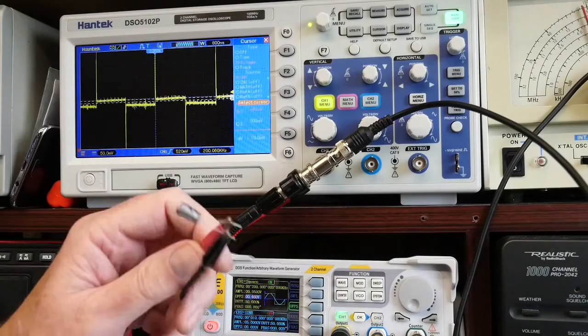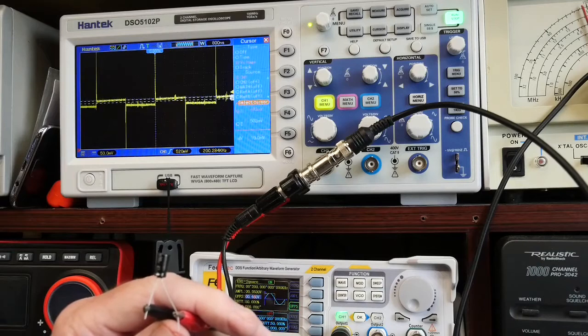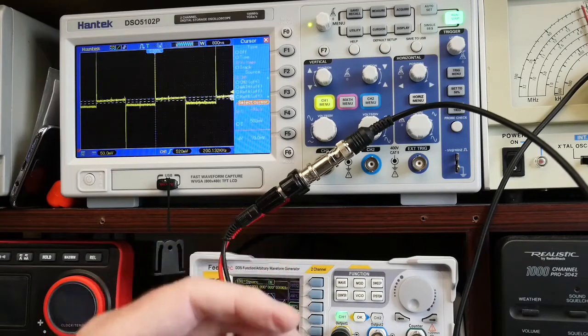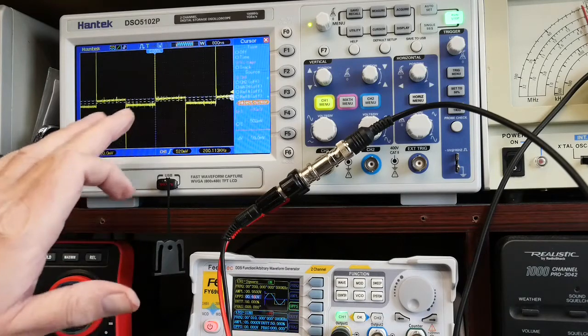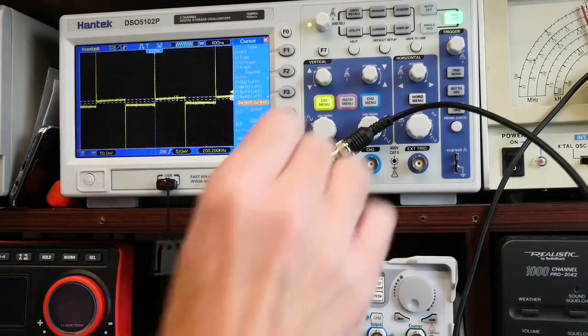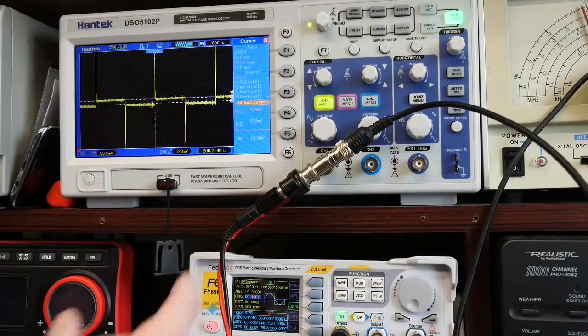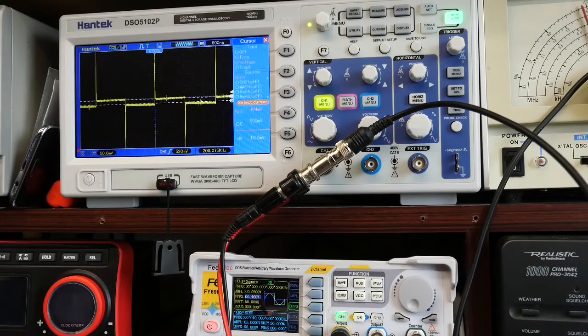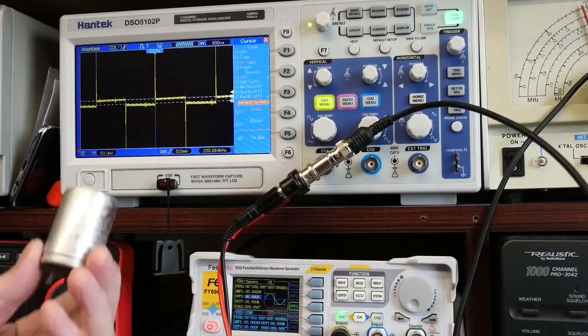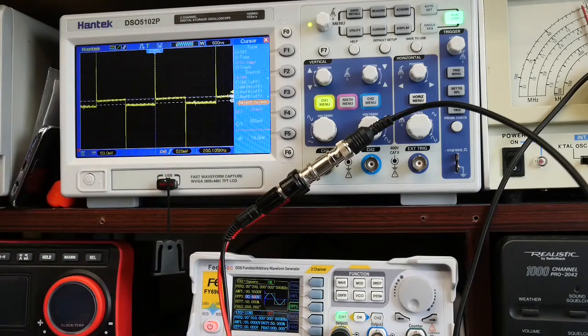I've now got a 47 microfarad, 50 volt, the nearest value to 50 microfarads that was new. As you can see, if I tweak the cursors a little bit, that's saying about 18 millivolts. So it's very similar to the capacitor which I believe is 40 or 50 years old, which is quite surprising really.